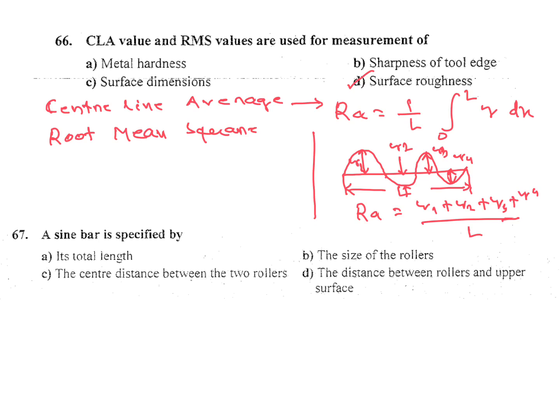In the case of root mean square, RMS is equal to 1 by L, 0 to L integration Y squared dx, whole root.